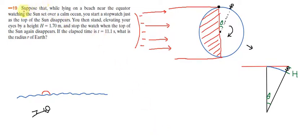Today we are going to do this question. I like this question — it's related to astronomy and cosmology. The problem says: suppose that while lying on a beach near the equator watching the sunset over a calm ocean, you start a stopwatch just as the top of the sun disappears. You then stand, elevating your eyes by a height of 1.7 m, and stop the watch when the top of the sun again disappears. If the elapsed time is 11.1 seconds, what is the radius of Earth?